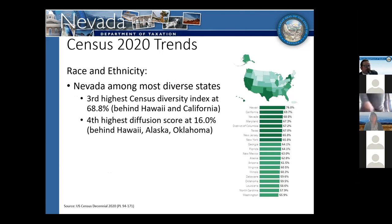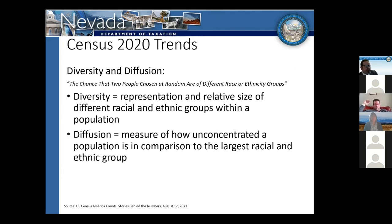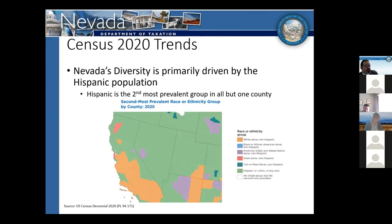Looking at race and ethnicity, Nevada ranked fairly high on the census diversity index — third highest behind Hawaii and California at 68.8%. We were also the fourth highest diffusion score behind Hawaii, Alaska, and Oklahoma. The diversity index measures the probability that two people chosen at random are from different racial and ethnic groups. The diffusion score measures how unconcentrated the population is compared to the largest racial and ethnic group. In Nevada, this is primarily driven by our Hispanic population, which is the second most prevalent group in all but one county — Mineral County, where it's actually Native American.